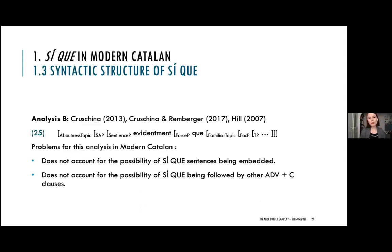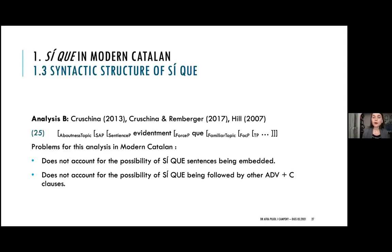There is also an analysis for adverb-plus-complementizer clusters — which pattern with CK in Catalan — proposed for Italo-Romance and Romanian, assuming a monoclausal structure where the adverbial-ish particle is in the speech act phrase above ForceP, and CK is realized in ForceP. However, having the adverbial-like element in the speech act layer would mean the sentence cannot be embedded, and it would also preclude CK from being followed by other adverb-plus-complementizer clauses, since each would need its own speech act layer.